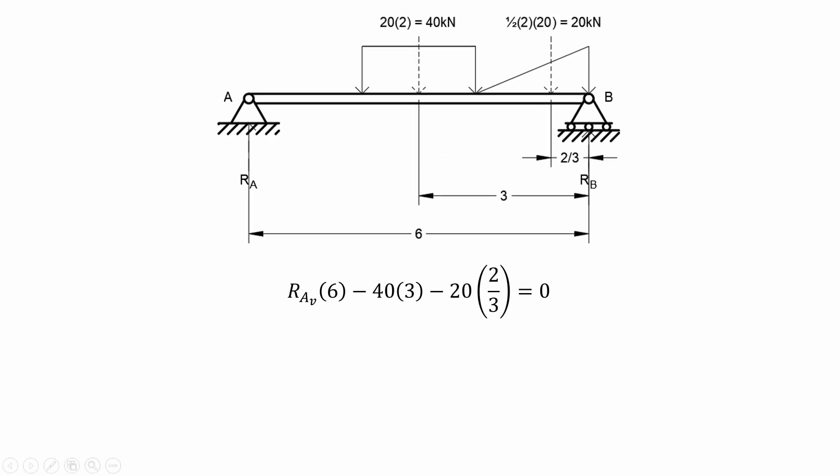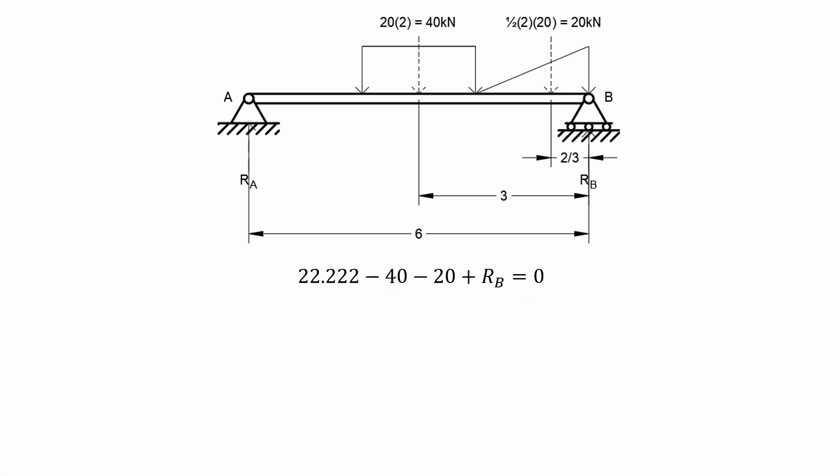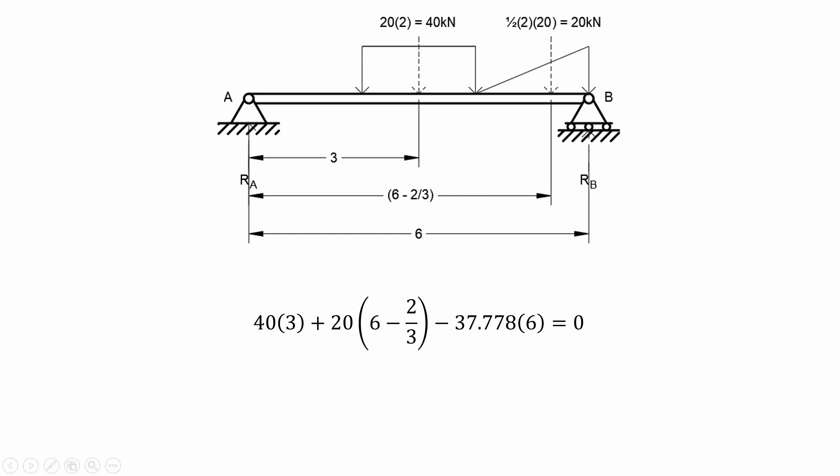Taking the summation of moment at B, and solving for rAv, we get 22.222 kN. Since the summation of vertical forces equals zero, we can determine rB. Solving for rB, we get 37.778 kN. To make sure we didn't miss anything, let's check that the summation of moment at A is also zero.